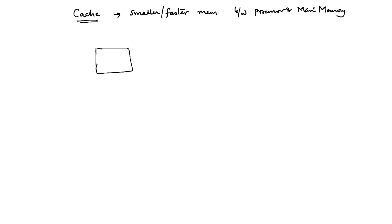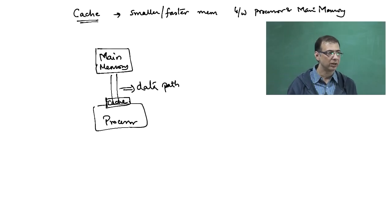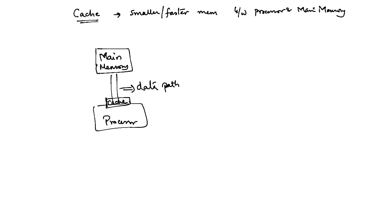So how does a cache work? This is your main memory, this is your data path and this is your processor. What we do is that we put a fast memory right next to the processor. Whenever the processor accesses some data, if that data resides in the cache, it is simply returned from the cache. I am giving a very simplistic view of what a cache does. If data is in cache, get from cache, otherwise get data from main memory and store it in the cache.